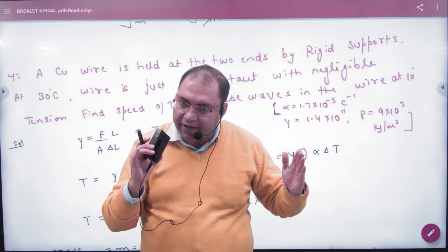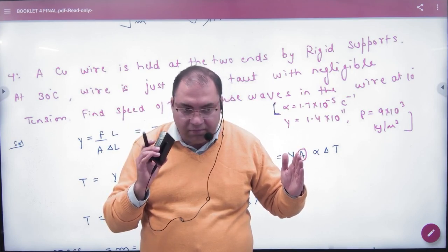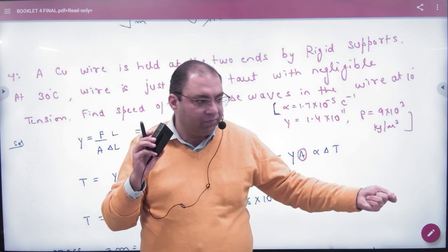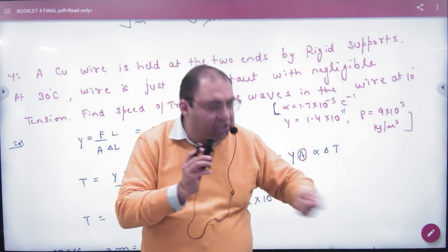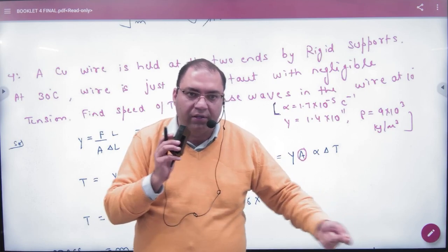Length kam ho gayi, wire choti ho gayi. Bandhi to hui hai 2 points mein, to tight ho gayi. Khinch gayi elastic hai to khinch gayi, chhoti ho ne ki wajah se. Clear hai hai na.